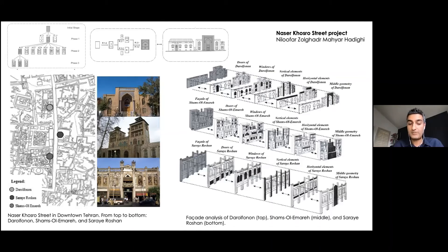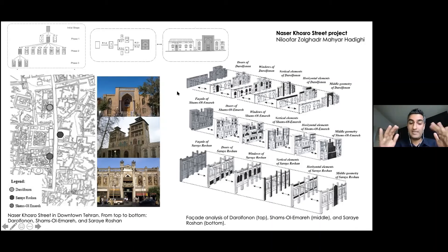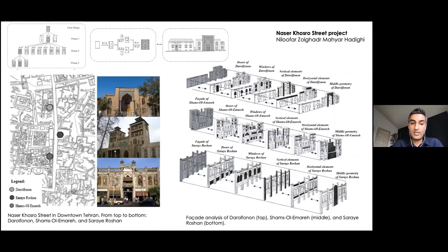The shape grammar we developed can generate designs more focused on elevation and facades than on plan — designs that are part of the context, learning from the context while also being contemporary, and also following design guidelines, code and zoning, sustainability guidelines, and all the things architects need to pay attention to.